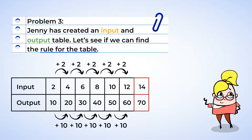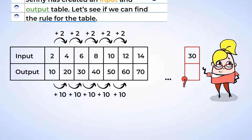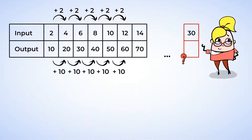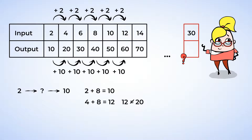Now, what if the input was 30 — what would be the output? It would take too long to continue the table until we got to 30, so let's look at the relationship between the input and output and find a shortcut. How can we get from 2 to 10? We can add 8, but let's see if that works for the input of 4. 4 plus 8 is 12, but our table has a 20. So adding 8 isn't the correct relationship between input and output.